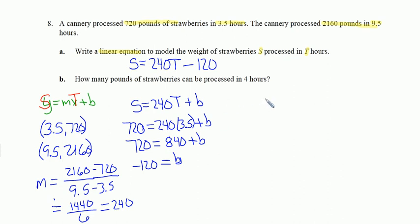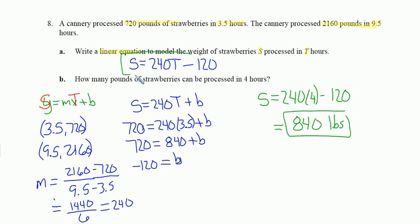Part B, how many pounds of strawberries can be produced in 4 hours? S will equal 240 times 4 minus 120. 240 times 4 minus 120 is 840. This is 840 pounds of strawberries. That's my answer for B, and this was my answer for A.